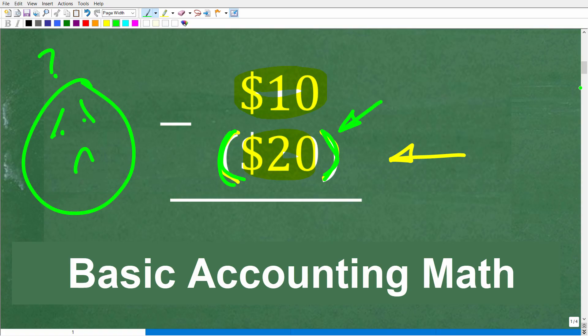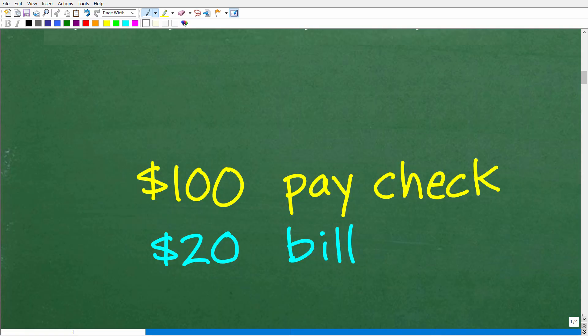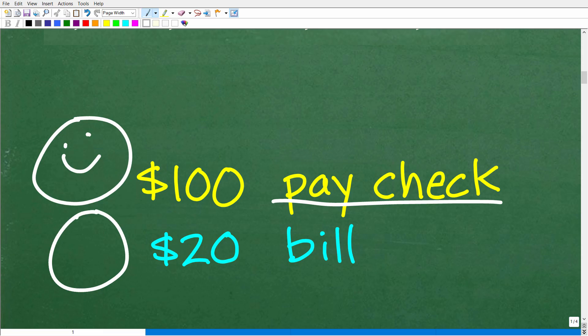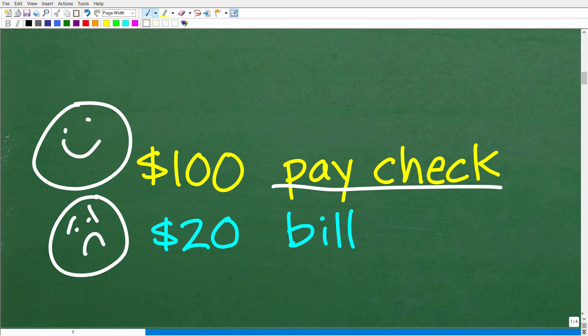Alright. So let's suppose you get paid $100 from your paycheck. So, of course, we're very happy about this. You put that $100 in the bank. Then you go to your mailbox and you see that you owe $20, right? You have some sort of bill. And obviously, the bill is for $20.